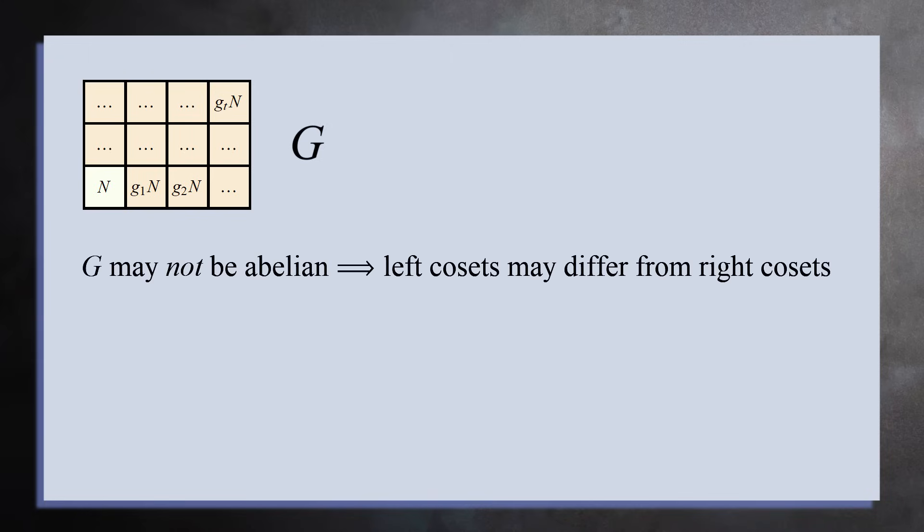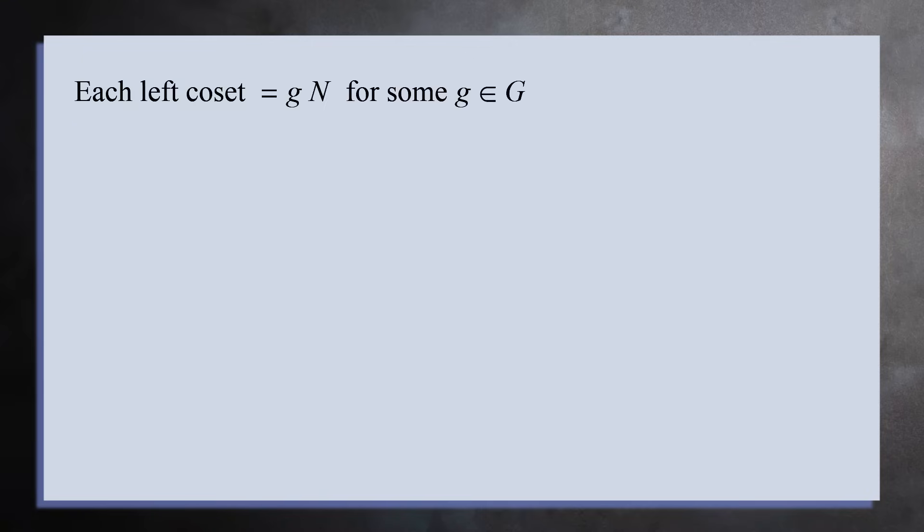Let's now see what properties N must have in order for the cosets to be a group. Let's assume N divides G into t different cosets. Since G may not be abelian, we need to be careful. Left cosets and right cosets may be different, so we'll go ahead and work with left cosets. Now, every left coset is of the form gN for some element g in the group. Since N is a subgroup, it contains the identity element e. This means x times e, which equals x, is in the first coset, and y times e, which equals y, is in the second coset.